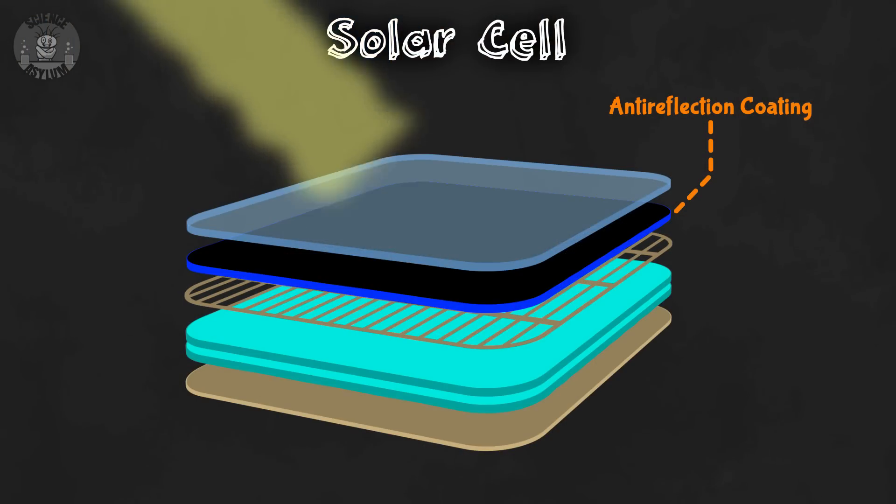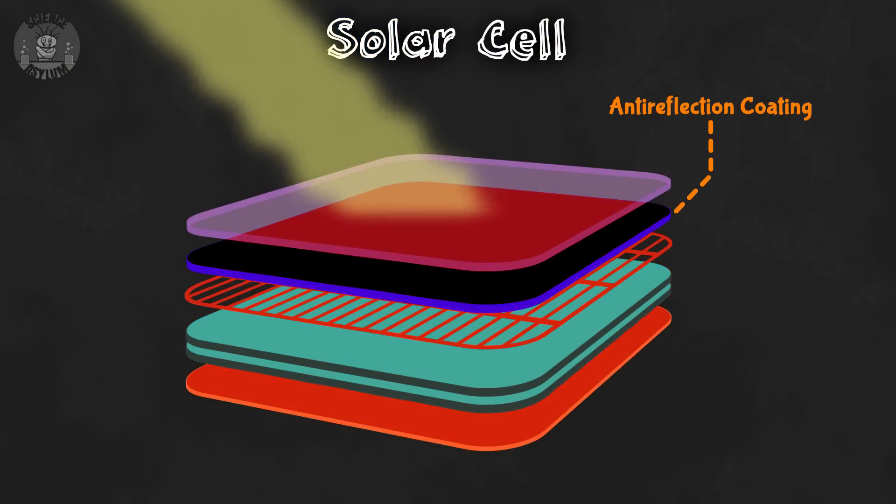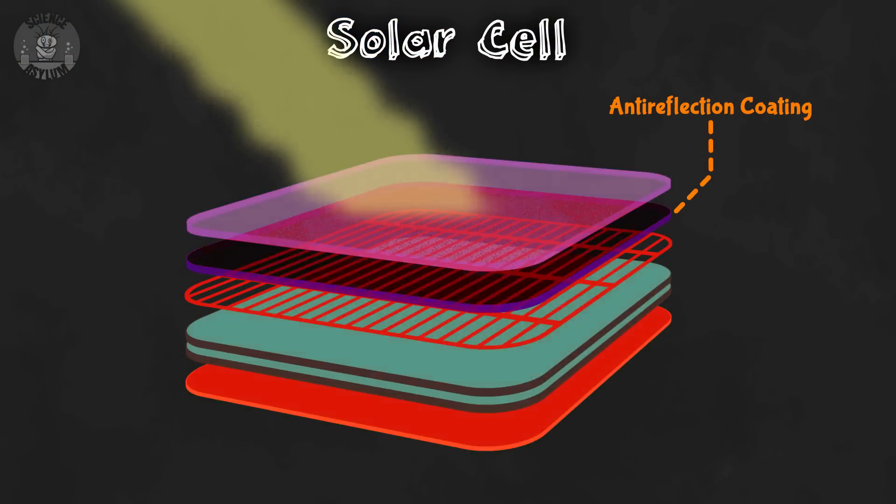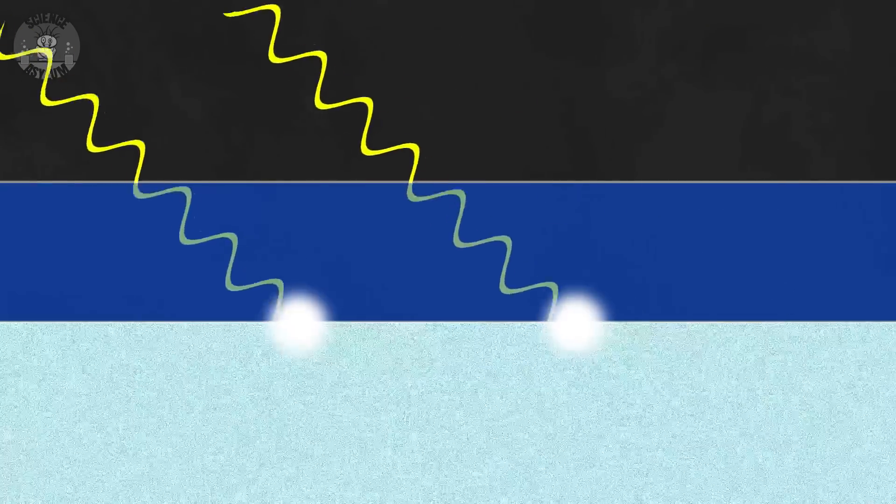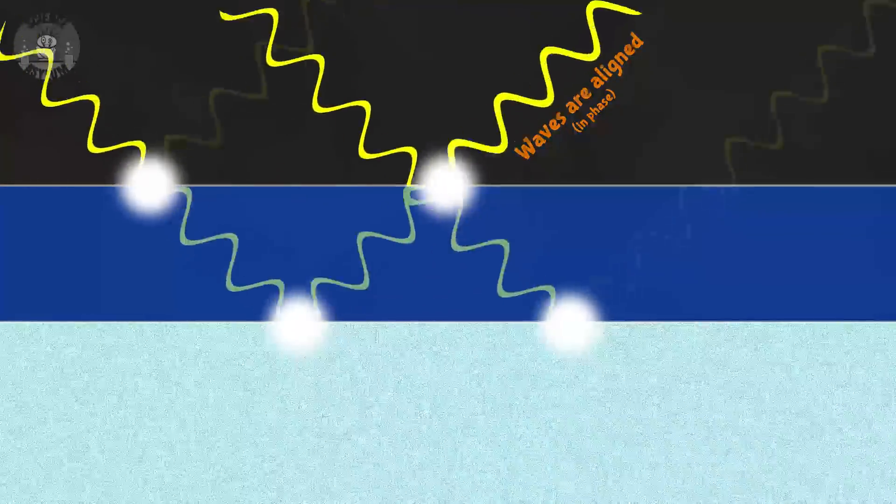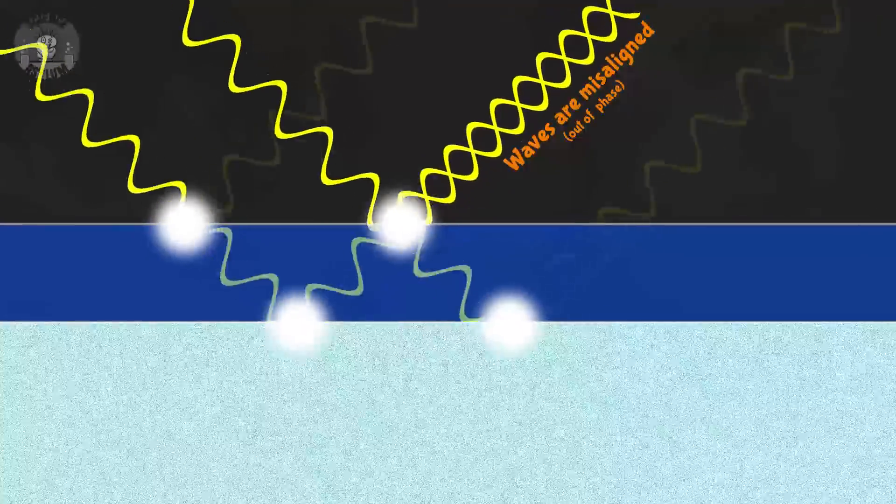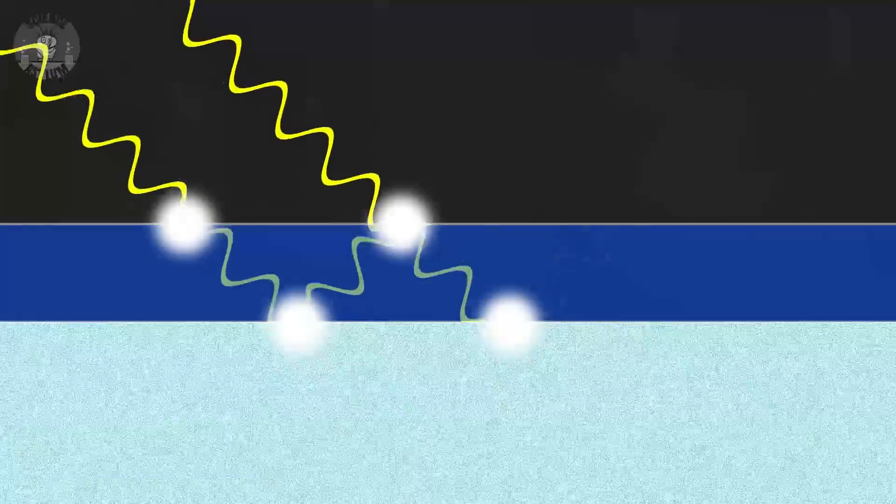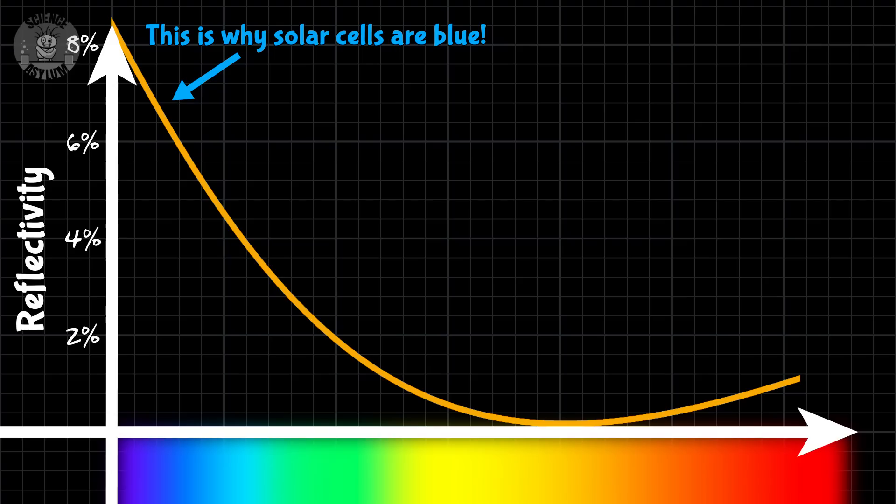You can't just coat it black. Otherwise, all the light would heat the cell and you wouldn't get any electricity. This coating has to be transparent. It must let the light pass through. But what happens is you get a reflection off the top and the bottom. If the coating is just the right thickness, the two will cancel, and the reflected light disappears, leaving only the incoming light. All of it? Unfortunately, no, but most of it. The amount of cancellation is wavelength dependent, but it's the best we can do. So, both the glass and the anti-reflection coating solve some practical issues.